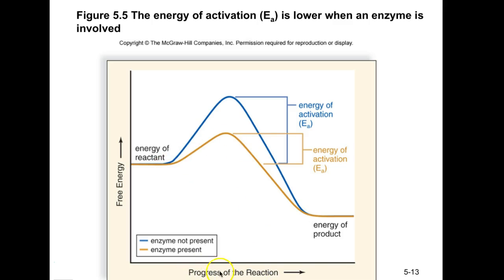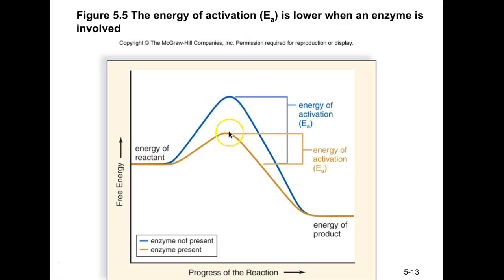On the x-axis is the progress of the reaction; on the y-axis is the amount of free energy. In blue we see the pathway without an enzyme, and the difference represents the E sub a. When an enzyme is introduced, that 'hump' is lowered, and the conversion from reactant to product occurs much more quickly.